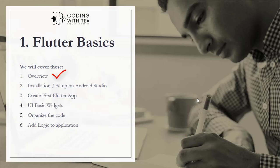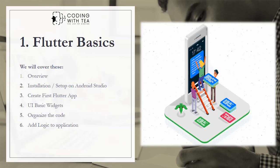Now let's move to part one: Flutter basics. In this part we are going to cover the overview, which is the current video. Next will be the installation and setup — we will install Flutter on Android Studio. Then we will create our first Flutter application, look at basic UI widgets needed to design any application, organize our code so we don't clutter it, and add simple logic.